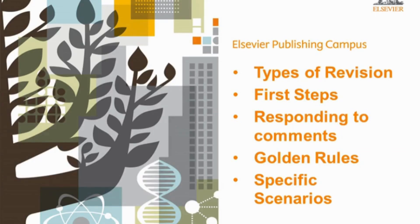Getting your first set of reviewers' comments can be quite overwhelming, so hopefully this advice will help you through this and turn your research into the best paper possible — one that does justice to all your hard work. During the next half an hour, we'll look at five different things: first, different types of revision, the difference between major and minor revisions, and the different decisions you may get from an editor. We'll also look at the first steps you should take once you get your comments back, and then we'll look at how to effectively respond to comments, with some golden rules to follow and some do's and don'ts.